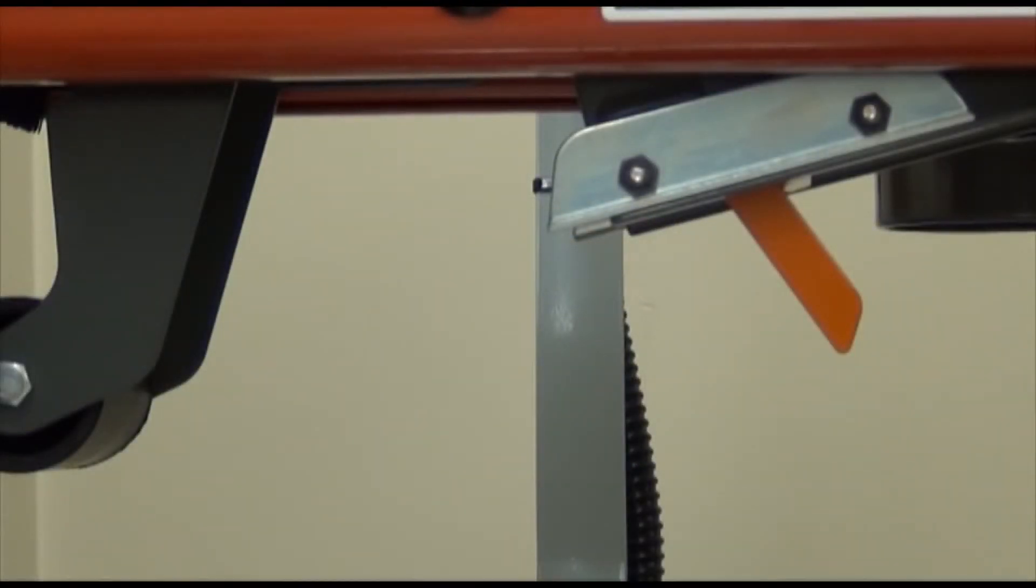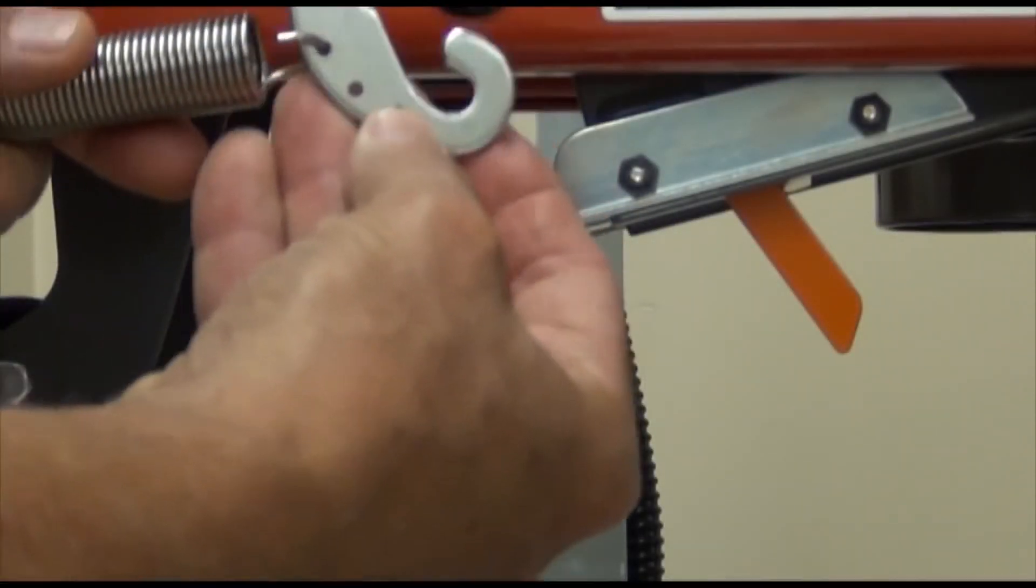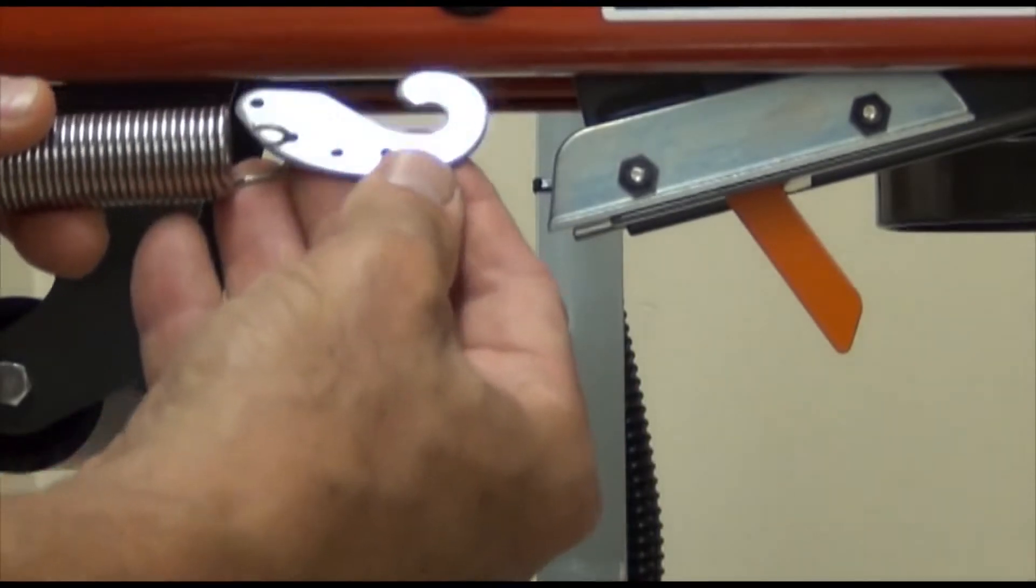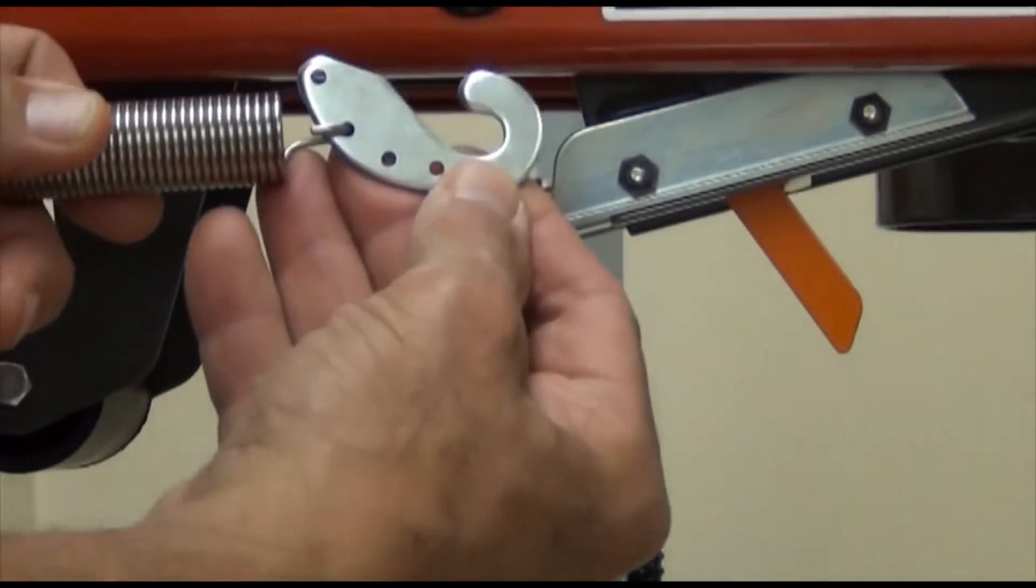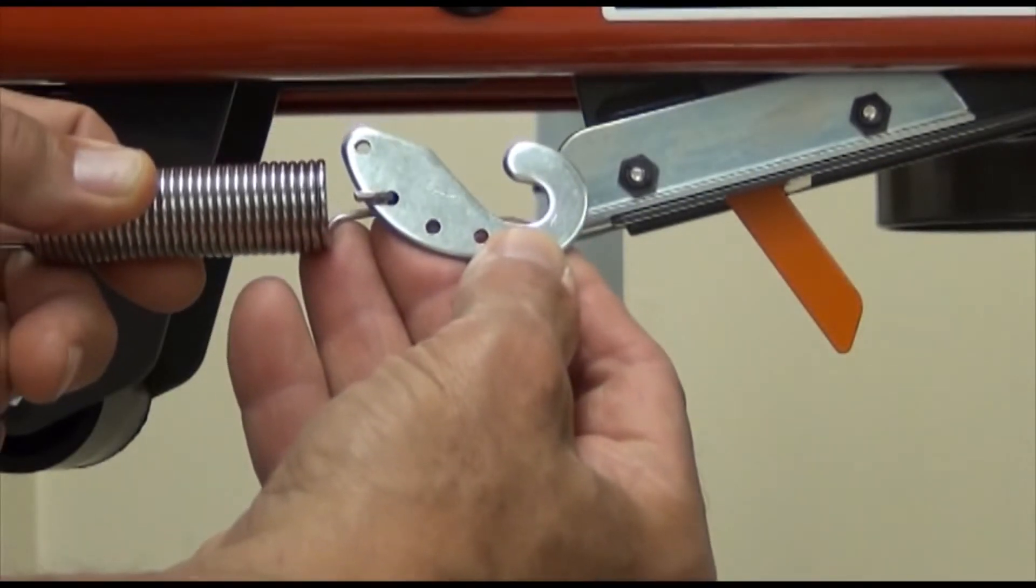Now we can go on to the next adjustment, the applying mechanism spring. The applying mechanism spring controls the applying and buffing roller tape wipe down pressure on the case and returns the mechanism to the rest position. The applying mechanism spring is factory set for standard operation.